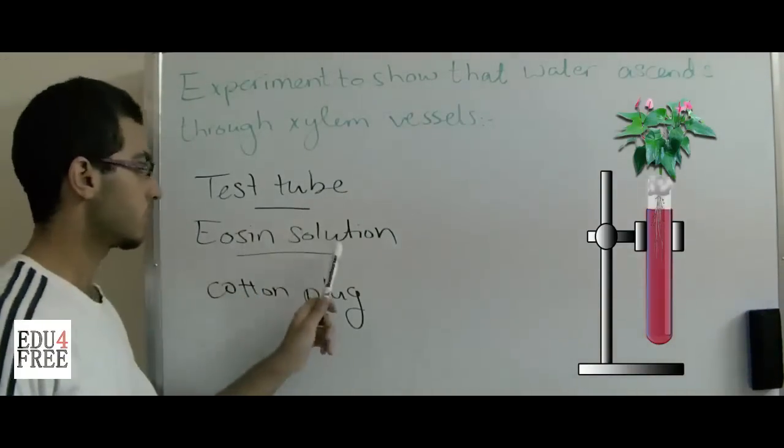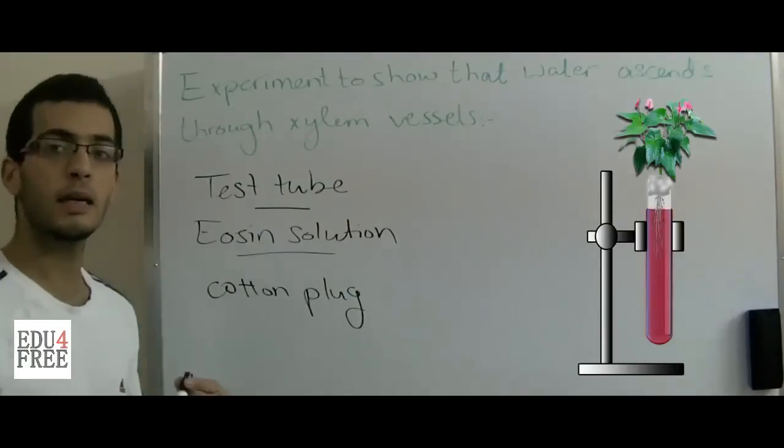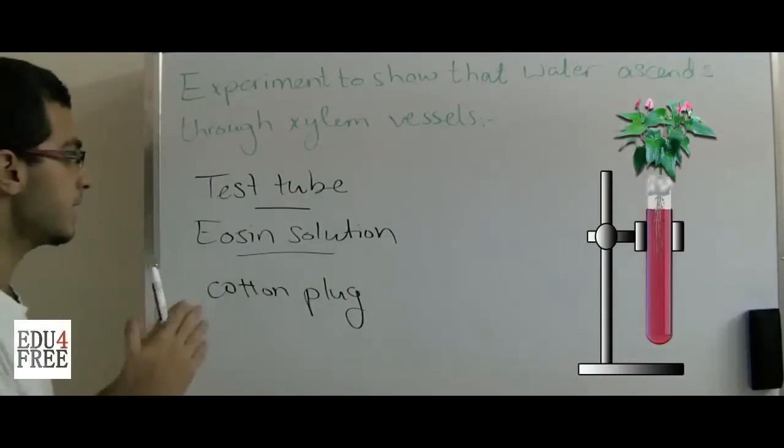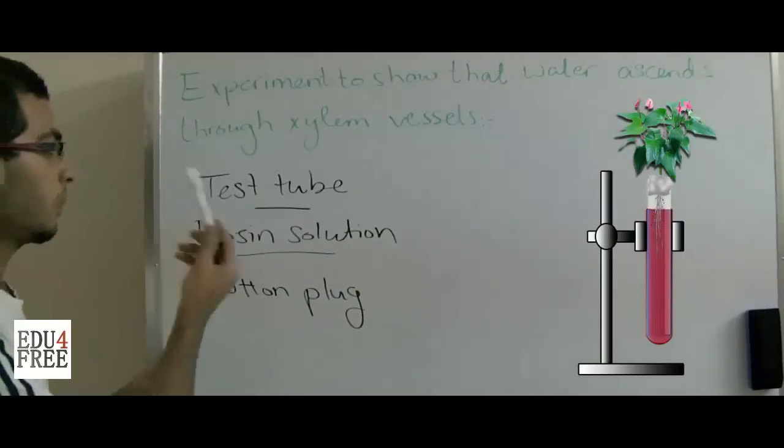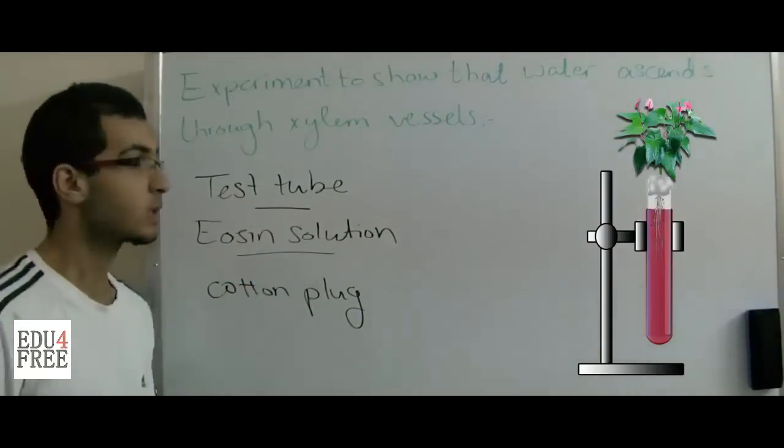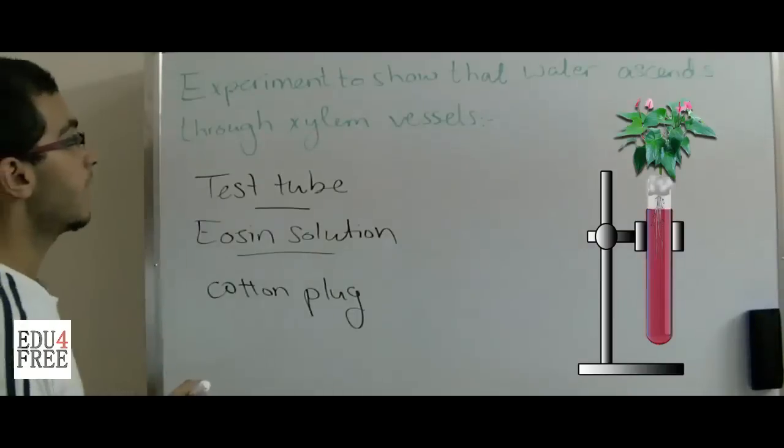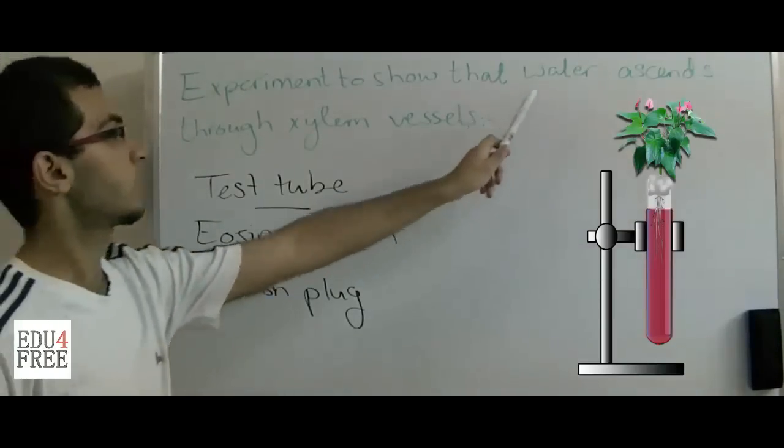the same color of the eosin solution. This indicates that the color has ascended from the test tube into the upper parts of the plant. So we have now proved the first part, that water ascends.